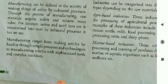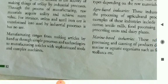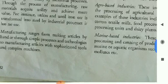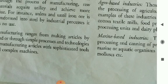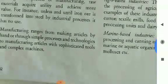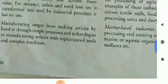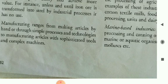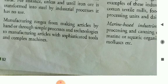Manufacturing can be defined as the activity of making things of utility by industrial process. Through the process of manufacturing, raw materials acquire utility and achieve more value. For instance, unless and until iron ore is transformed into steel by industrial processes, it has no use.